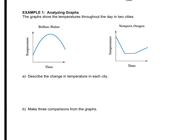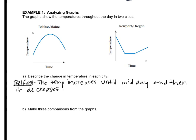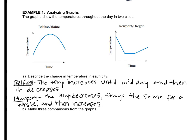Let's put that down as our answer to letter A. Now, as we get further into this lesson, we're going to talk about the differences between increasing and decreasing slopes — you can see here it's decreasing very quickly, and here it's increasing relatively slowly in comparison to the morning. All increases and decreases are not the same. Pause the video and answer letter B on your own: make three comparisons from the graph, comparing Maine to Oregon.